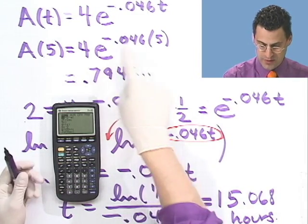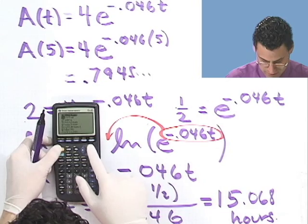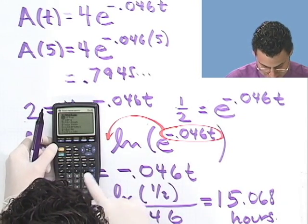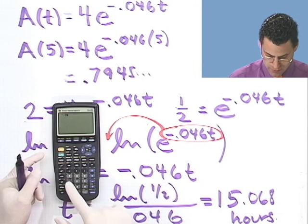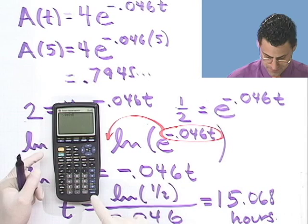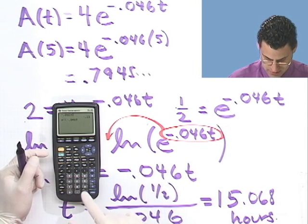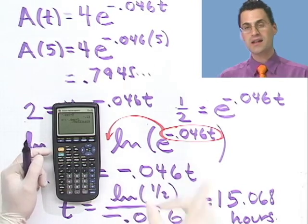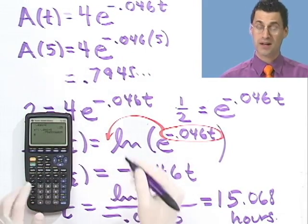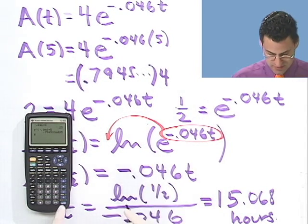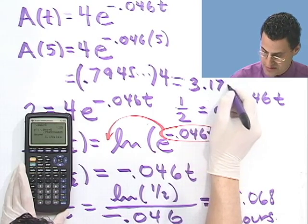So I'm going to compute this number once again — maybe I just made a mistake. Let me recompute: e to the minus 0.046 times 5. I did make a mistake, because that value I had written is just this e part — I never multiplied it by 4. Look how I caught my own mistake. If I multiply by 4, I get a much happier answer: 3.17 micrograms.